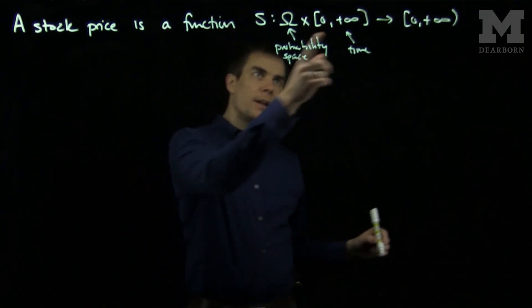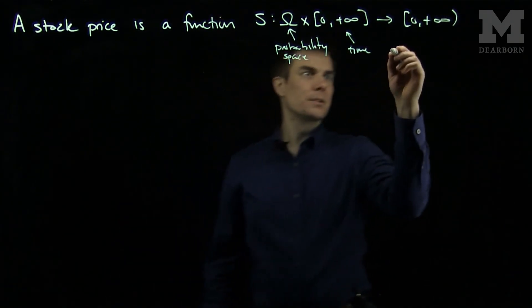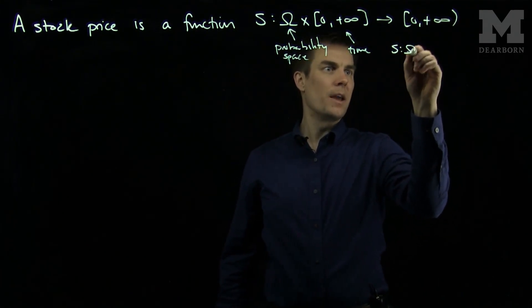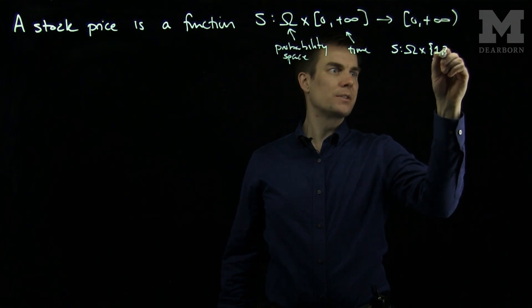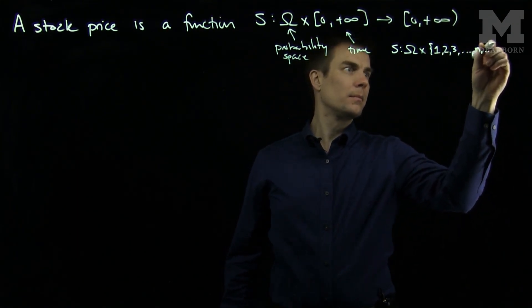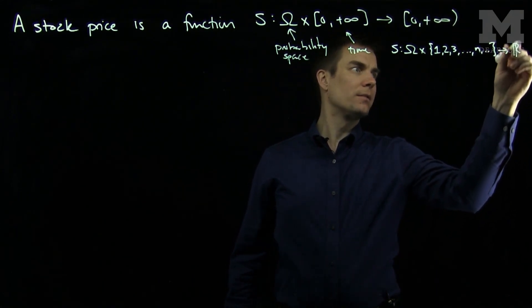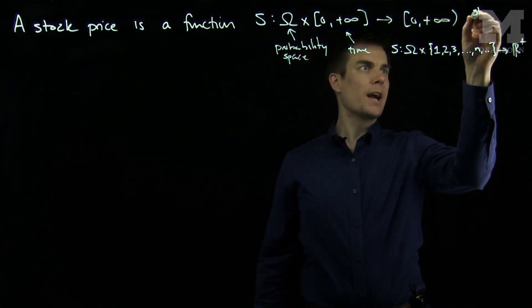So here this Omega is a probability space and this interval over here is our time. And as I've written it, time is going to be a continuous variable, but if S maps Omega cross a discrete set of times into the positive reals, in the continuous case, this is referred to as a stochastic process.